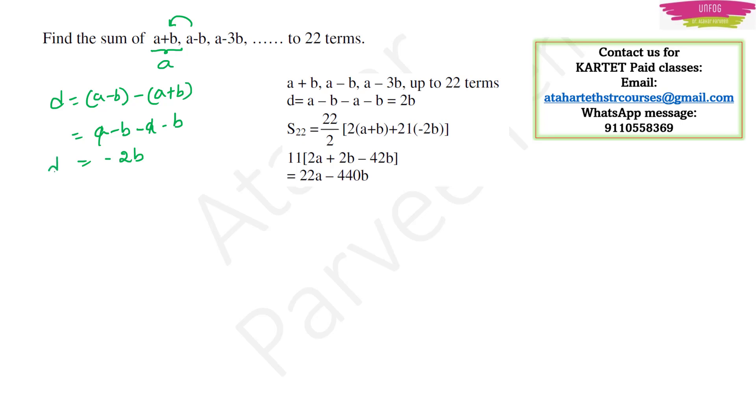Now once we have the common difference, we know that Sn is equal to n by 2 into 2a plus n minus 1 into d. Now substitute the values. We know that n is equal to 22. So this will be 22 by 2 into 2 into what is a, in place of a I should write a plus b as per the question plus n is 22 minus 1 into in place of d, I should write minus 2b.